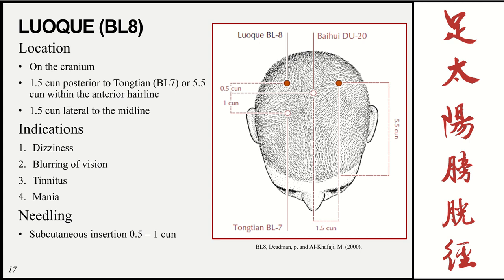Bladder 8 is also on the cranium, 1.5 cun posterior to bladder 7, or 5.5 cun posterior to the anterior hairline, on that same 1.5 cun lateral line. Functions include dizziness, blurring of vision, tinnitus, and mania — that last one being different from the other points. Insertion is exactly the same: 0.5 to 1 cun.